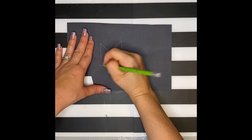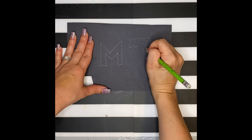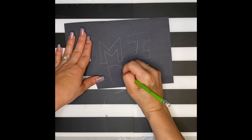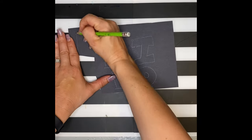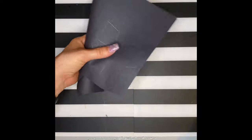While it's drying, you want to go ahead and start drawing letters of your name. It can be your first name, your last name, or both. I'm doing my last name. I'm using a black paper to create contrast.